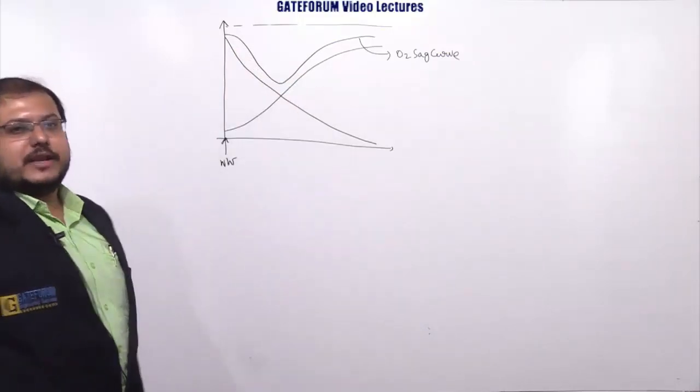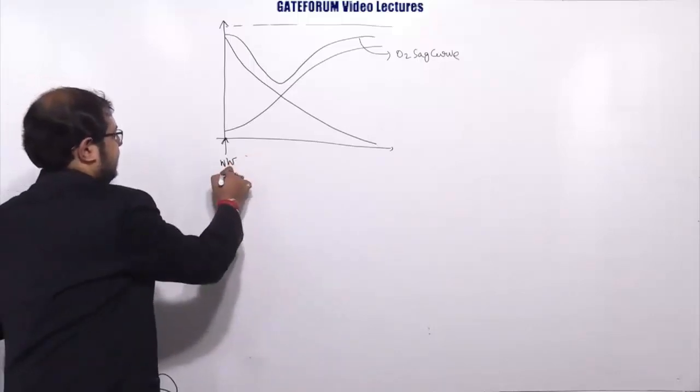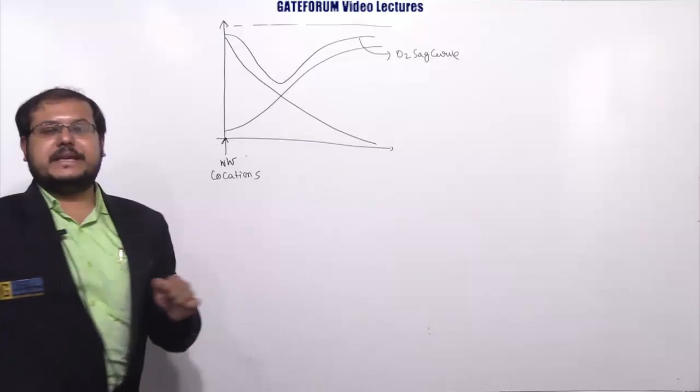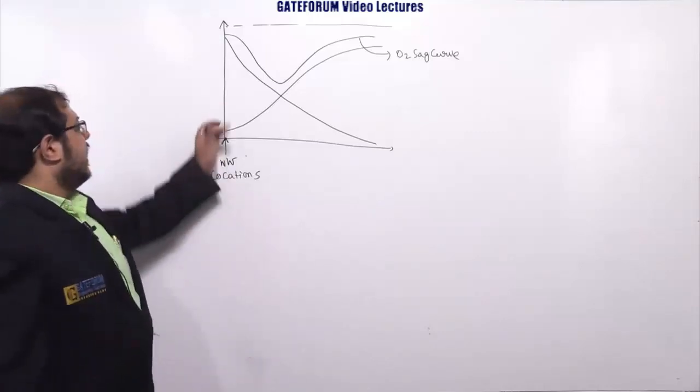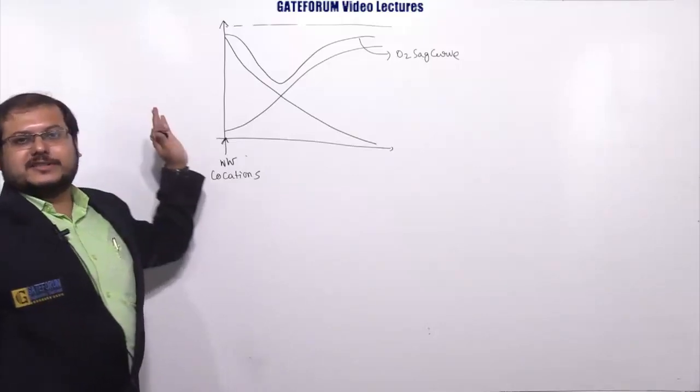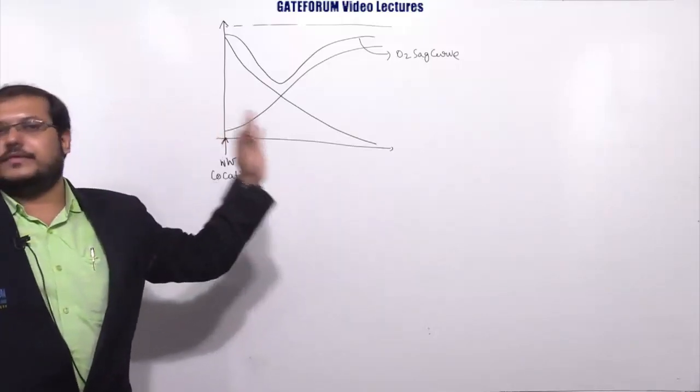Option A is lowest at location S. No, it is location S. Option B is lowest at a point upstream of location S. Upstream of location S is not our point of concern. Remain constant all along the length of the river, it is not possible.